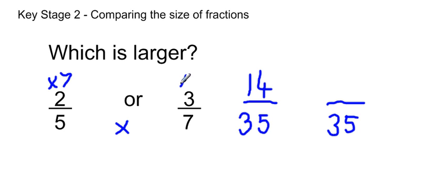And likewise with the three-sevenths, we've multiplied the seven by five to get the thirty-five. So we have to multiply the top number by five. So three multiplied by five is fifteen.